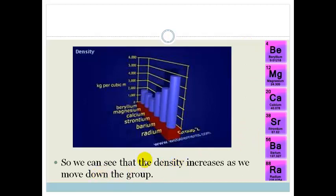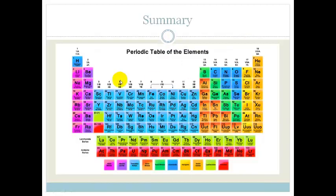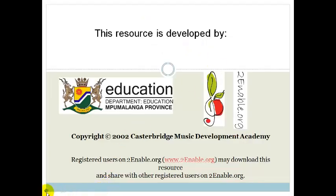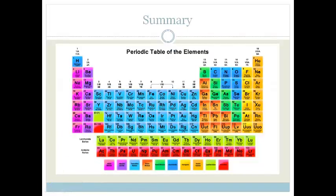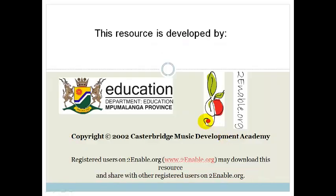So let's do the summary. Basically, we know the density increases as we go across a period. And it increases as we go down the group. Right. Thank you, Grade 10s. I hope you've learned a lot in this lesson. Have a wonderful day.